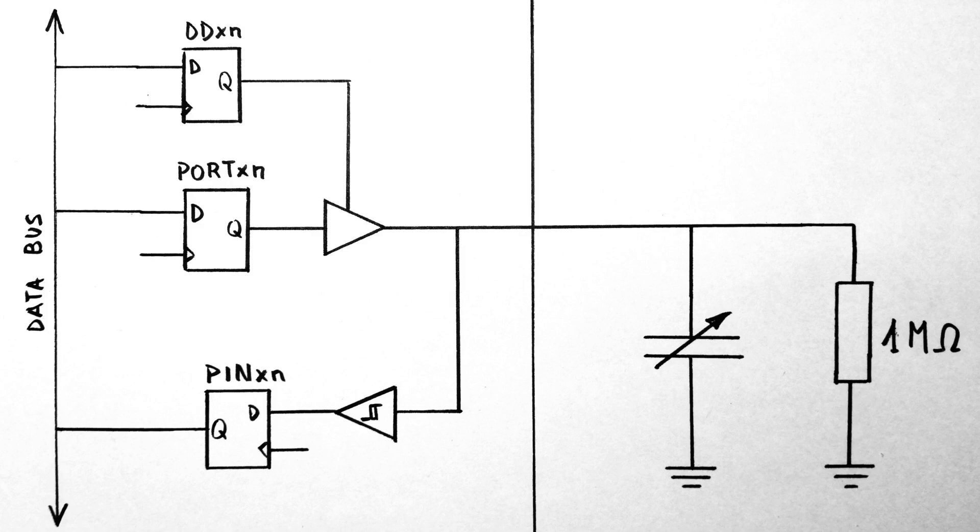Here you can see on the left we have the data direction register, this is what determines if the output is enabled or in high impedance mode. The port XN determines what value the pin has when it's in output mode, and then the pin X register has the value of the pin when it's reading it in input.